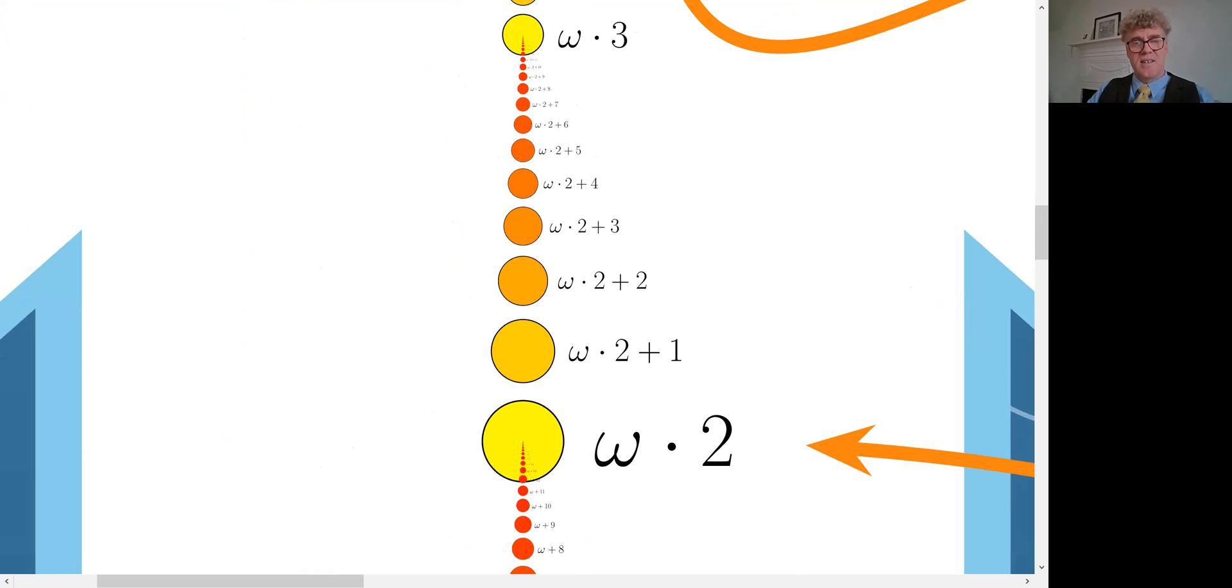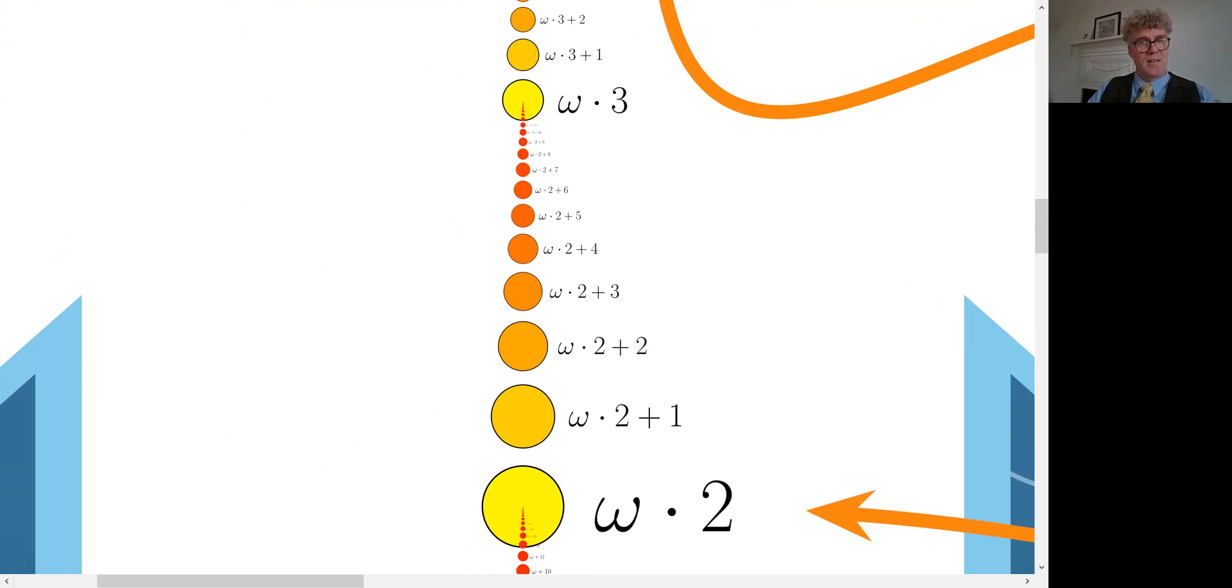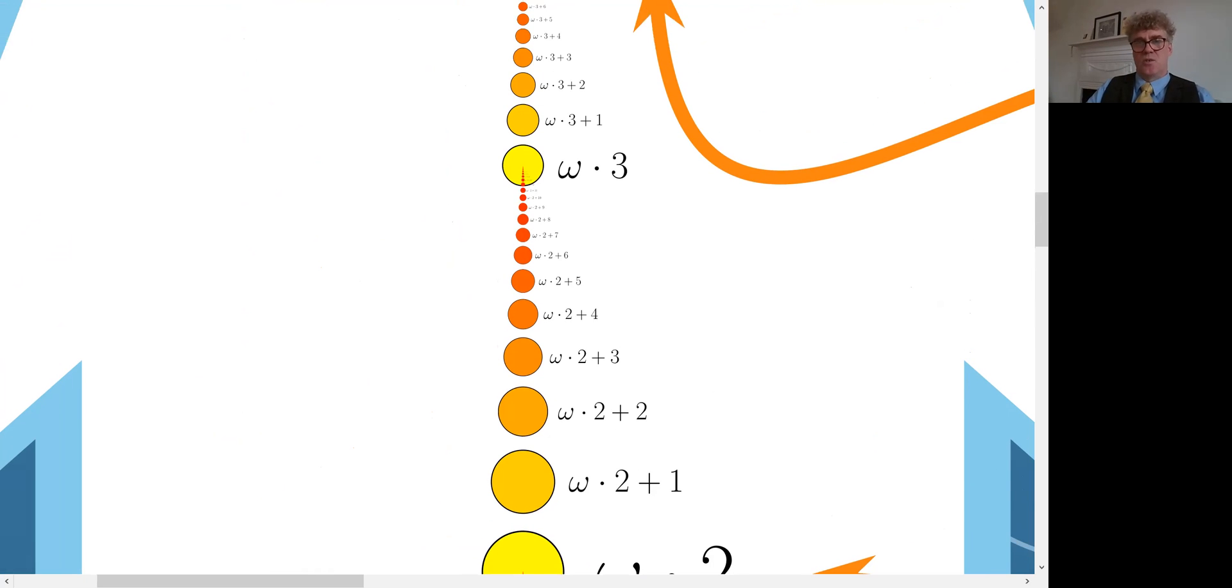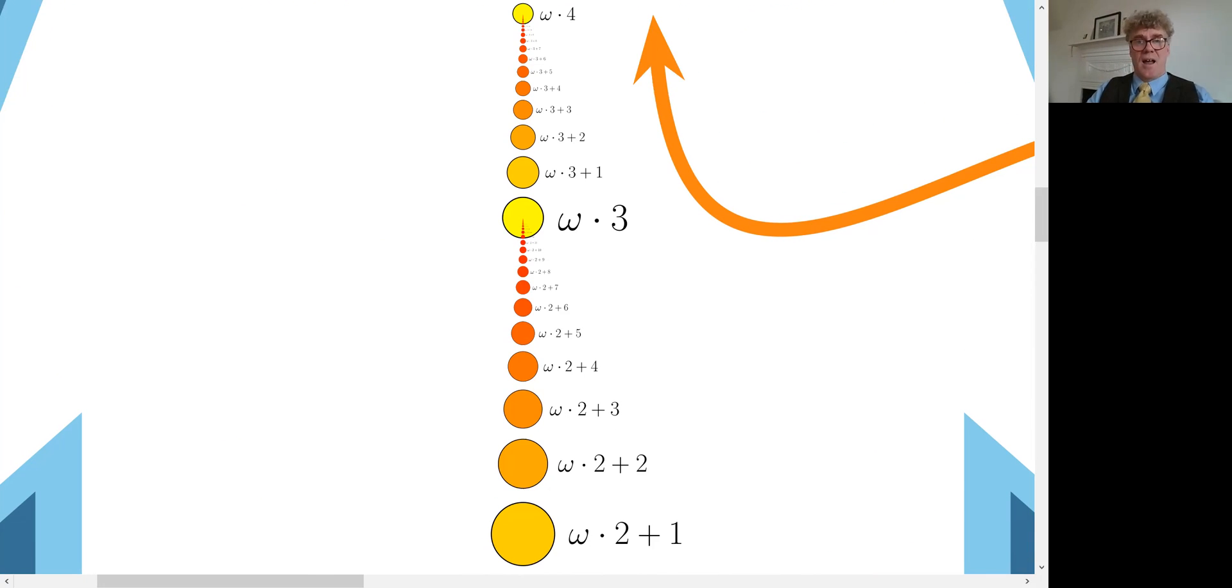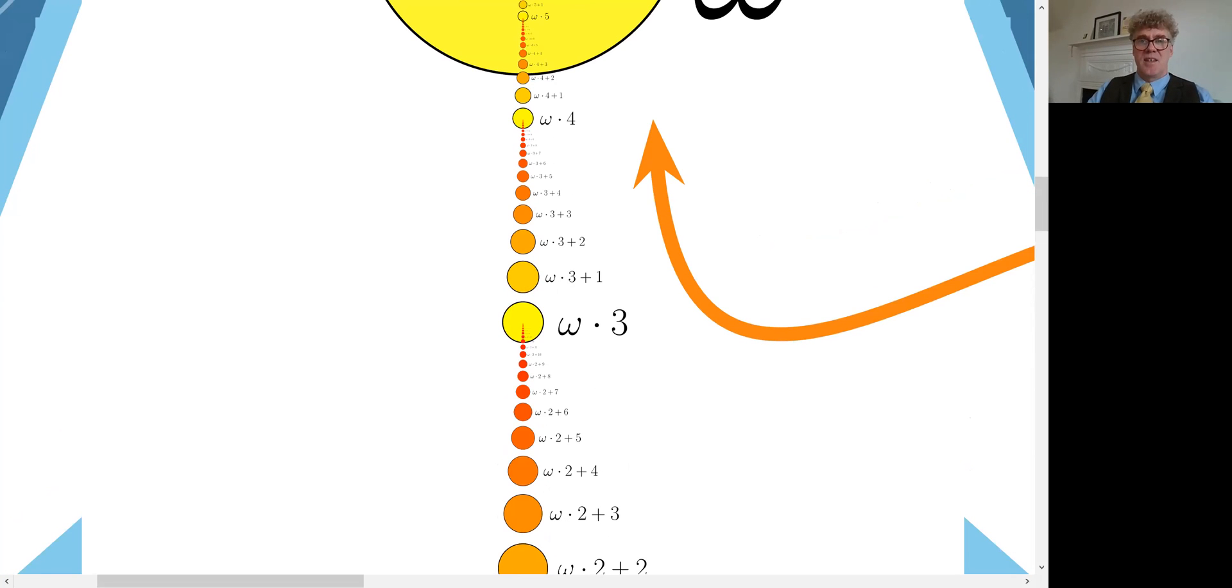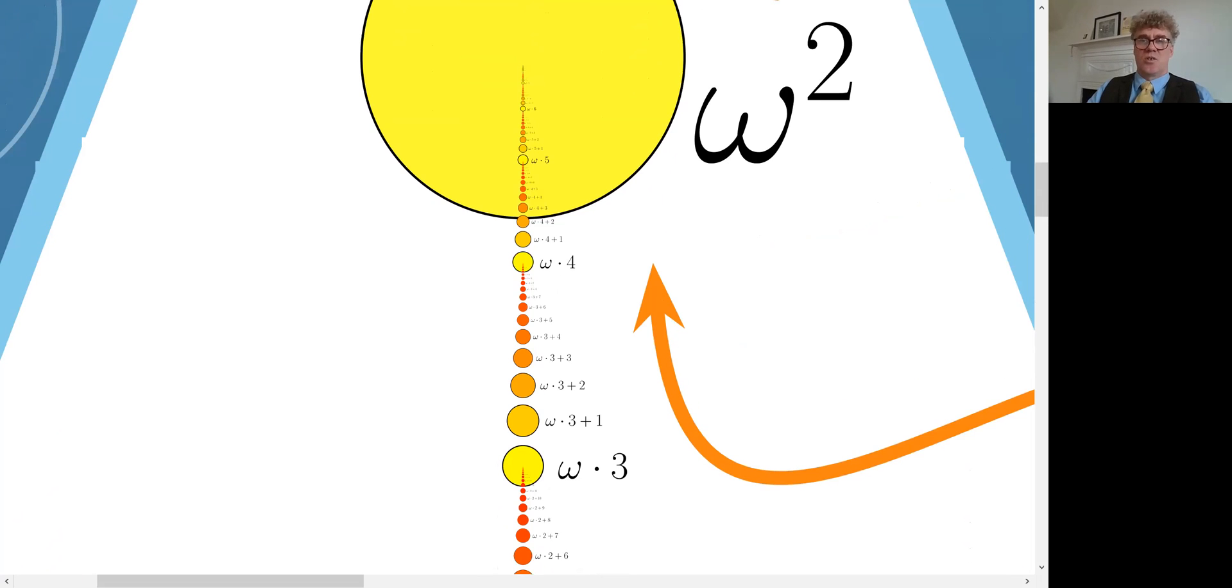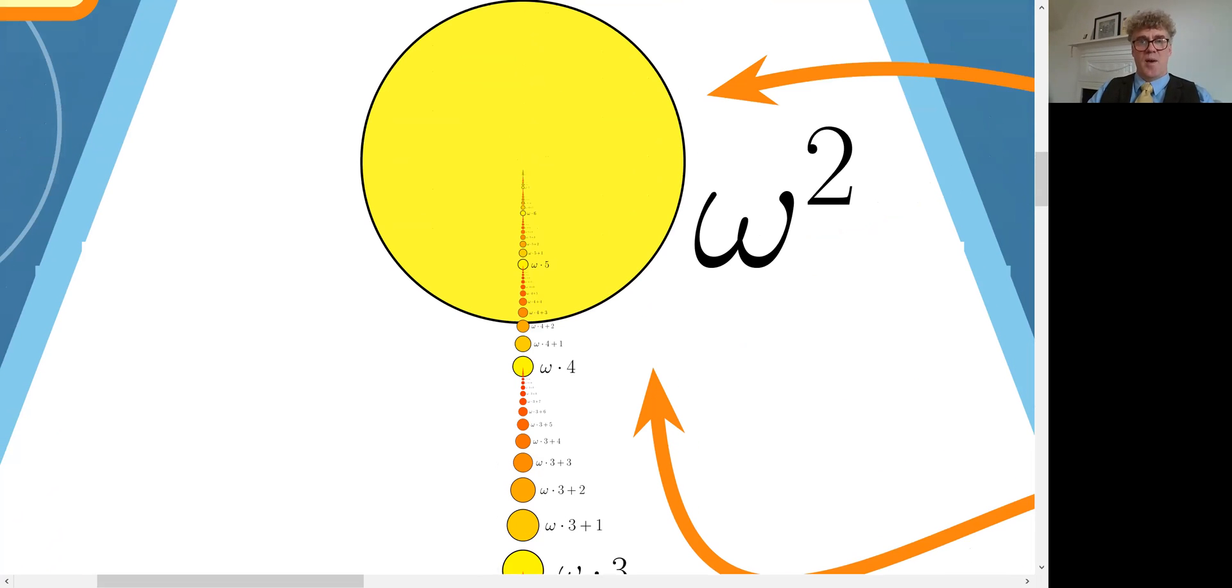Let's zoom in here so we can see what's really going on because after omega times three comes, of course, omega times three plus one, omega times three plus two, omega times three plus three and so on and we'll get to omega times four and then omega times five and omega times six and so on. And the limit of all of those numbers is the ordinal number known as omega squared.